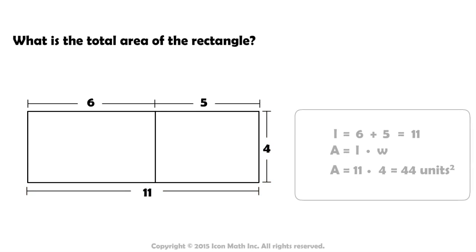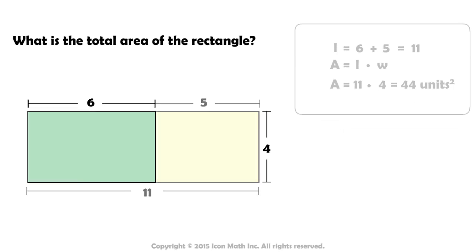The second method is to find the area of each individual rectangle and then add the two areas to find the total area of the figure. The first rectangle has an area of 6 times 4, or 24 units squared.